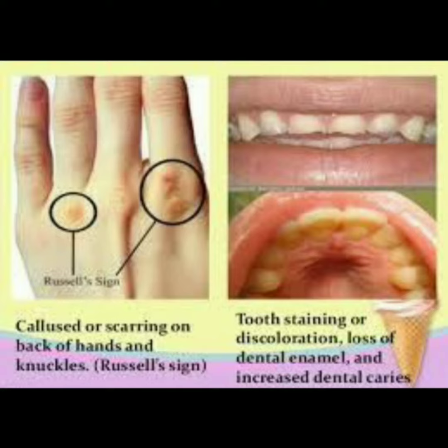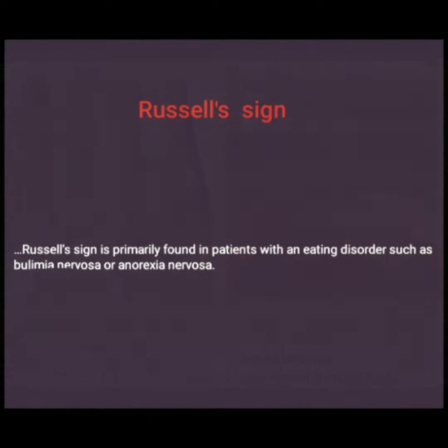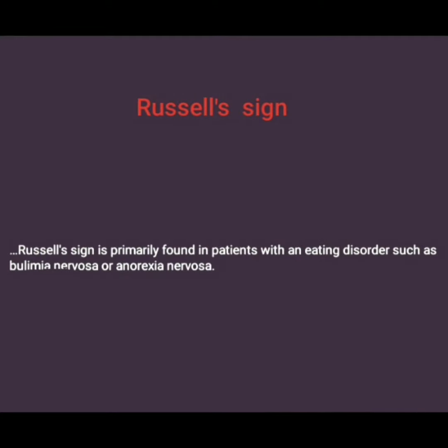Russell's Sign — left side image — and right side: tooth staining or discoloration, loss of dental enamel, and increased dental caries. Russell's Sign is primarily found in patients with an eating disorder such as bulimia nervosa or anorexia nervosa.